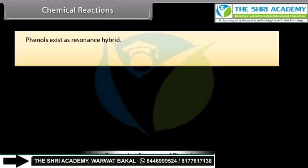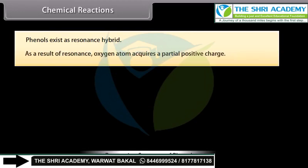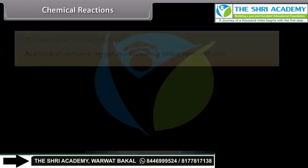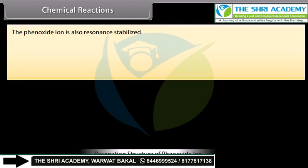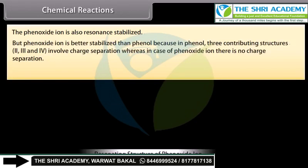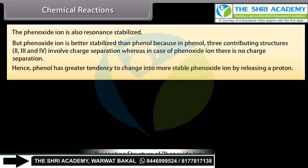Phenols exist as resonance hybrid. As a result of resonance, the oxygen atom acquires a partial positive charge. It weakens the OH bond and thus facilitates the release of proton. The phenoxide ion is also resonance stabilized, but phenoxide ion is better stabilized than phenol. Because in phenol, 3 contributing structures — the 2nd, 3rd and 4th — involve charge separation, whereas in case of phenoxide ion there is no charge separation. Hence, phenol has greater tendency to change into more stable phenoxide ion by releasing a proton.